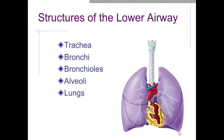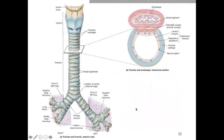Getting a closer view without the lungs in the way: we have our larynx coming into our trachea. The trachea divides down into our primary bronchi. Each primary bronchi — our first set of bronchi — will divide again into our secondary bronchi, and then into our tertiary bronchi, the third division.